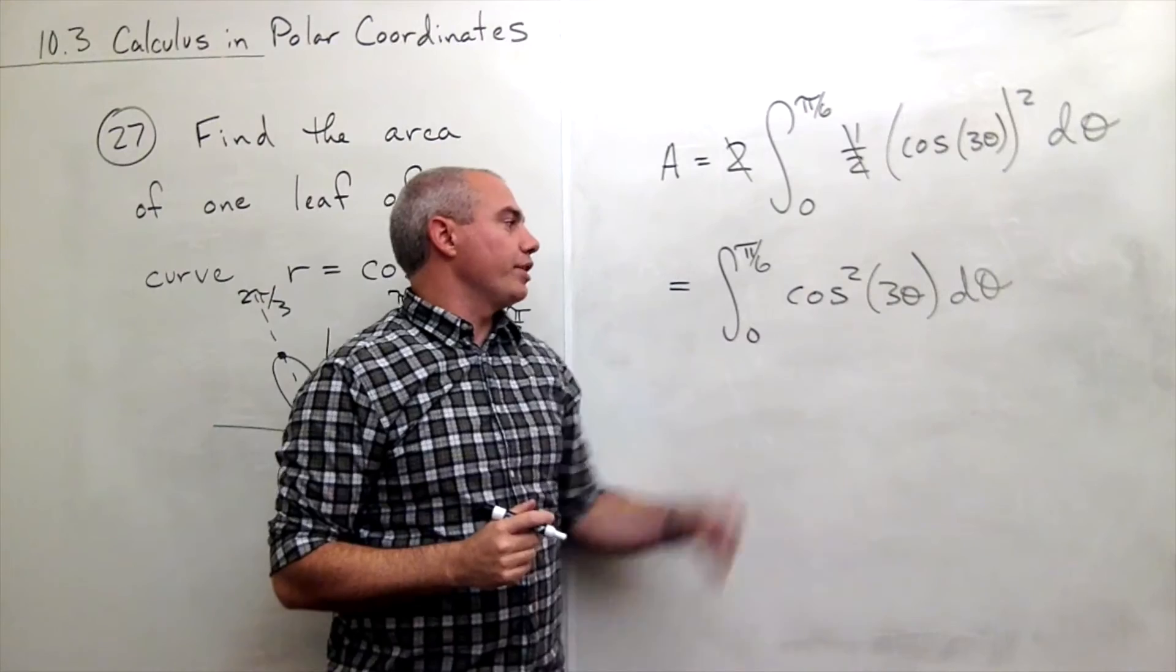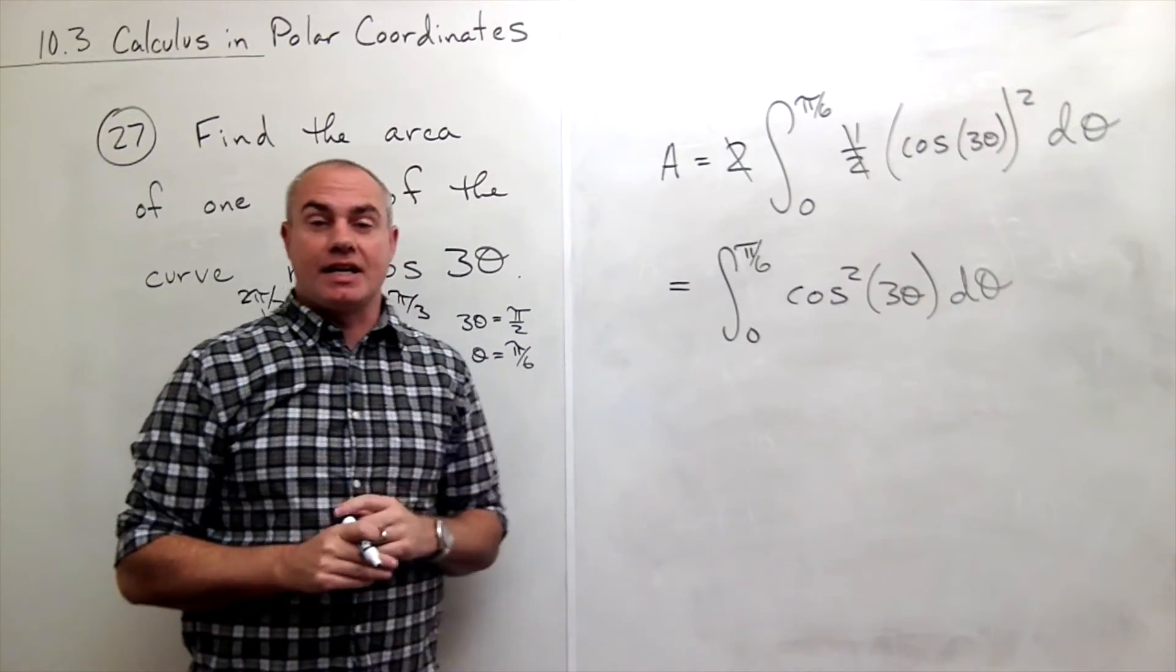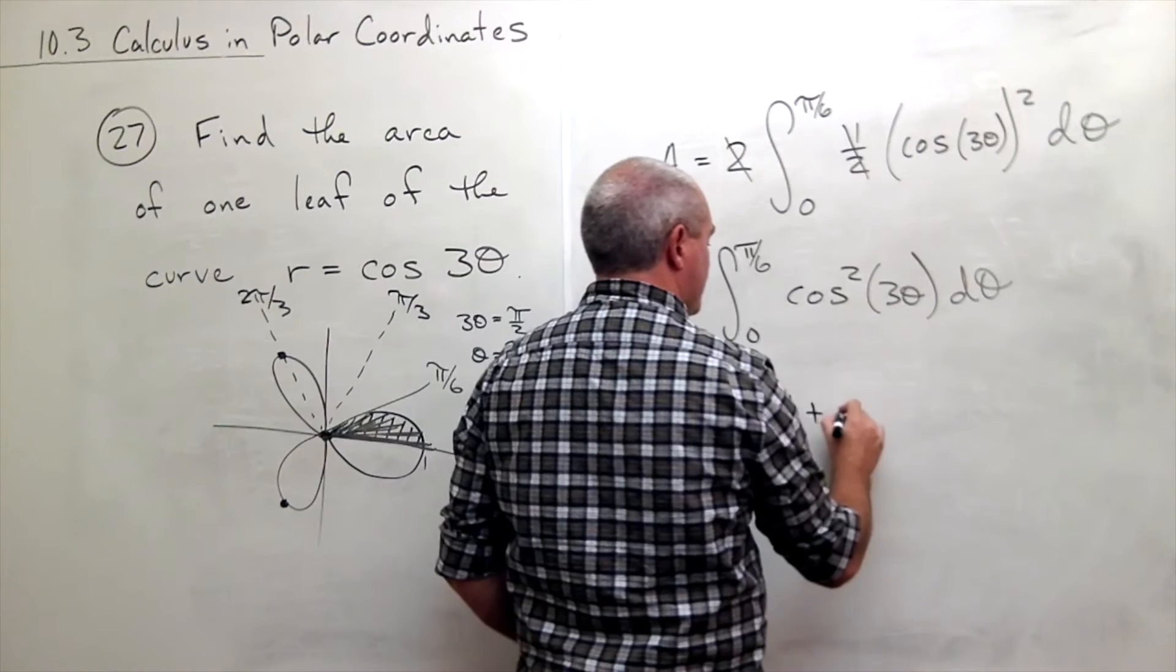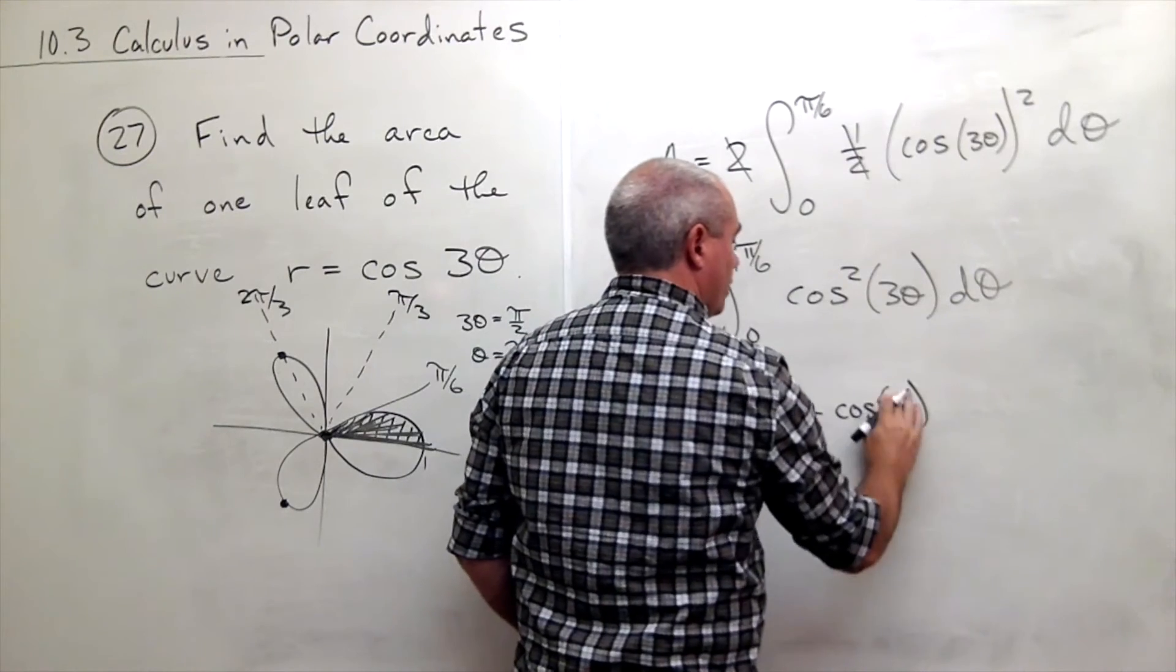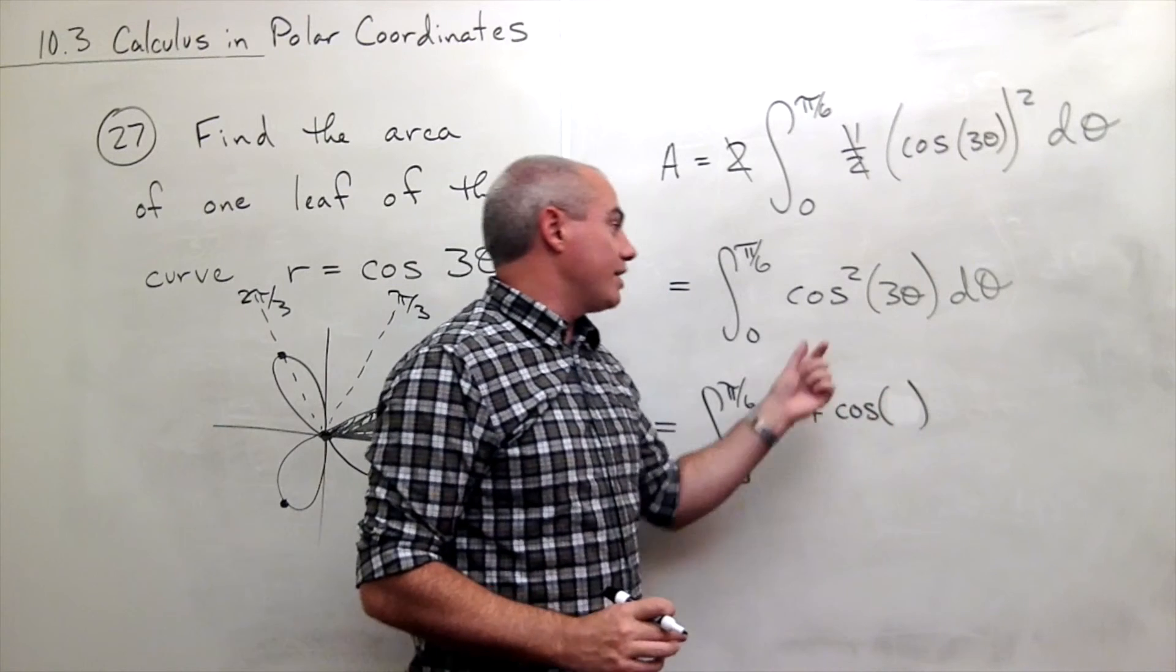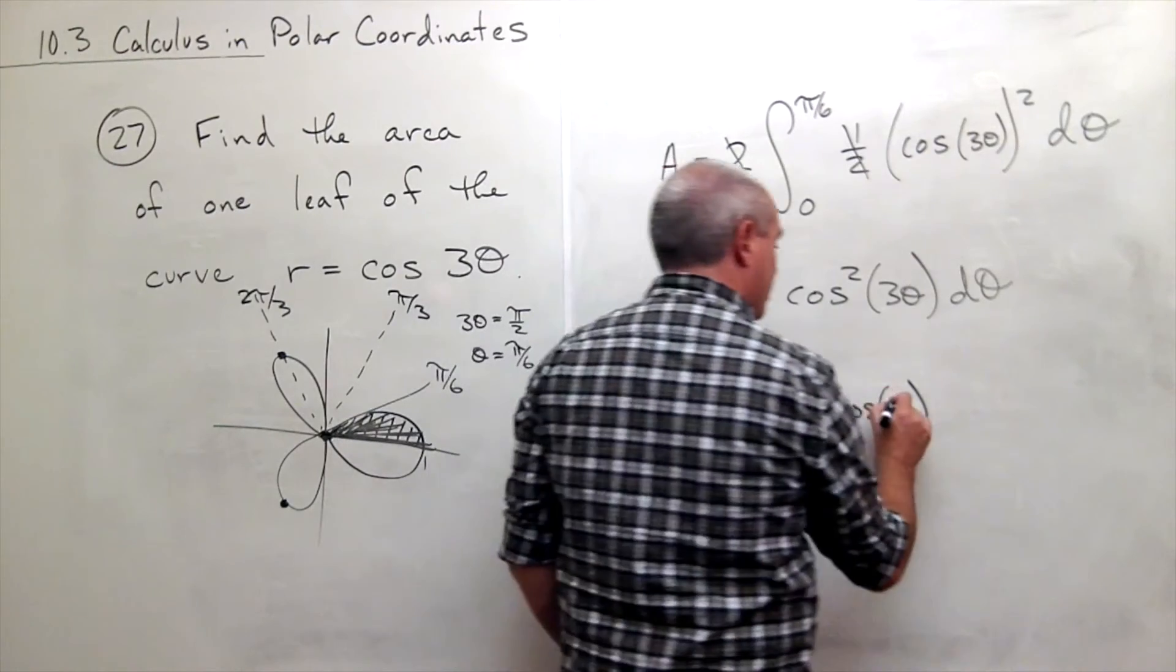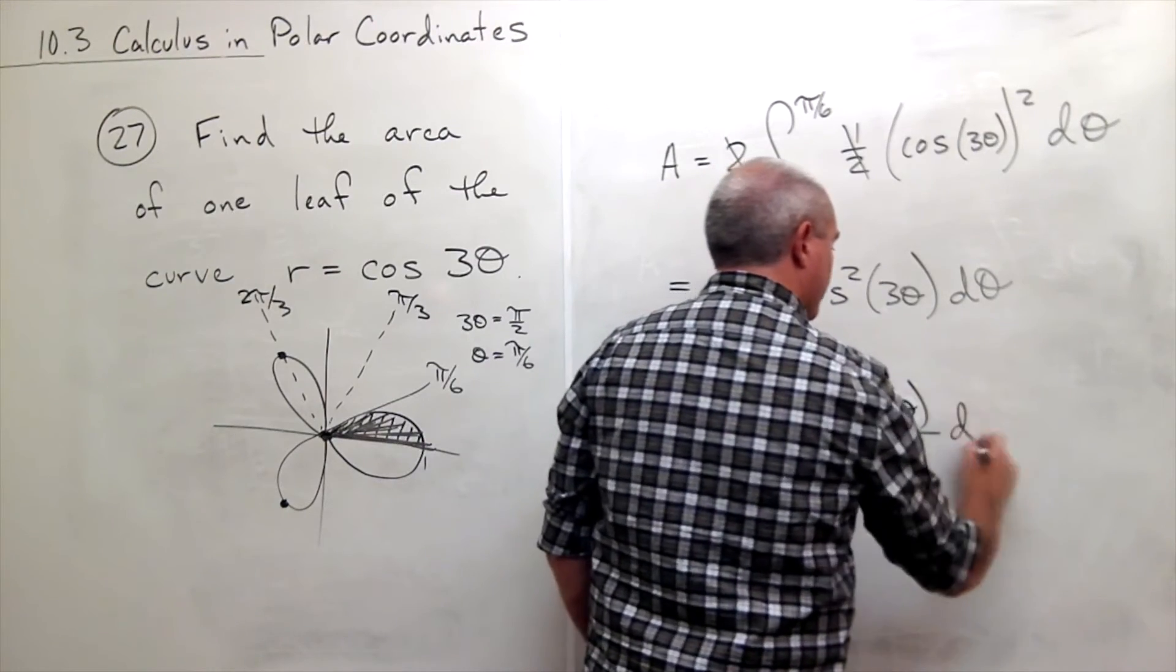We have a cosine squared of three theta. I can't take an anti-derivative of it in its current form so I'm going to use a half angle identity to replace that. If I do I get integral zero to pi over six of one plus cosine of two theta. I'm sorry not two theta so let's be careful here. We have one plus cosine of not two theta because we didn't start with theta here. We started with three theta so I need to double three theta. Doubling three theta gets me six theta all over two d theta.